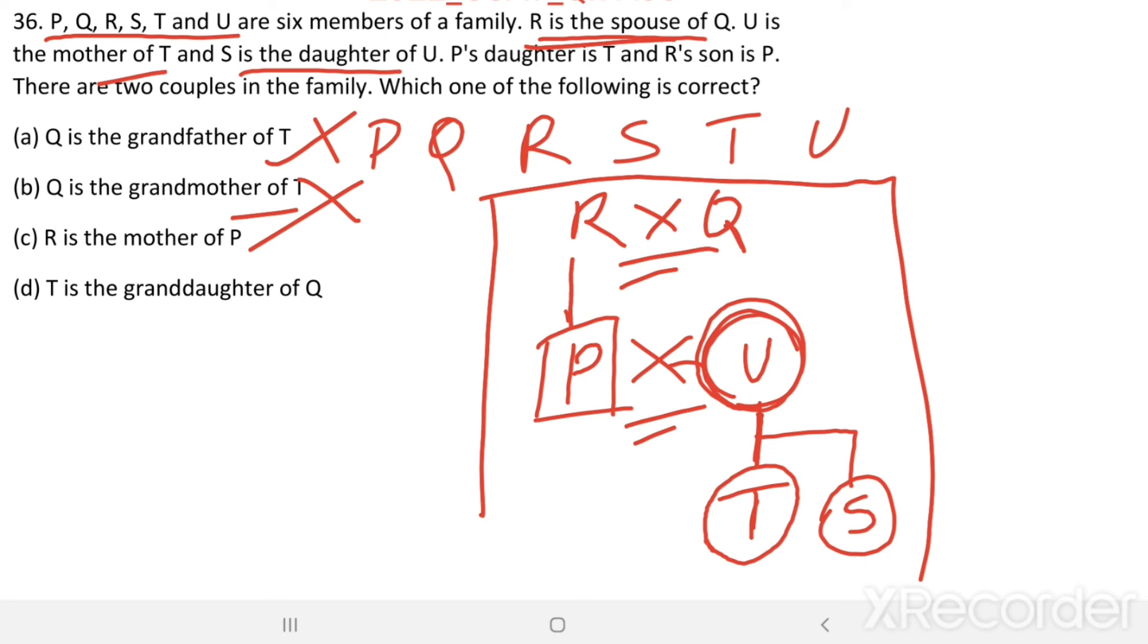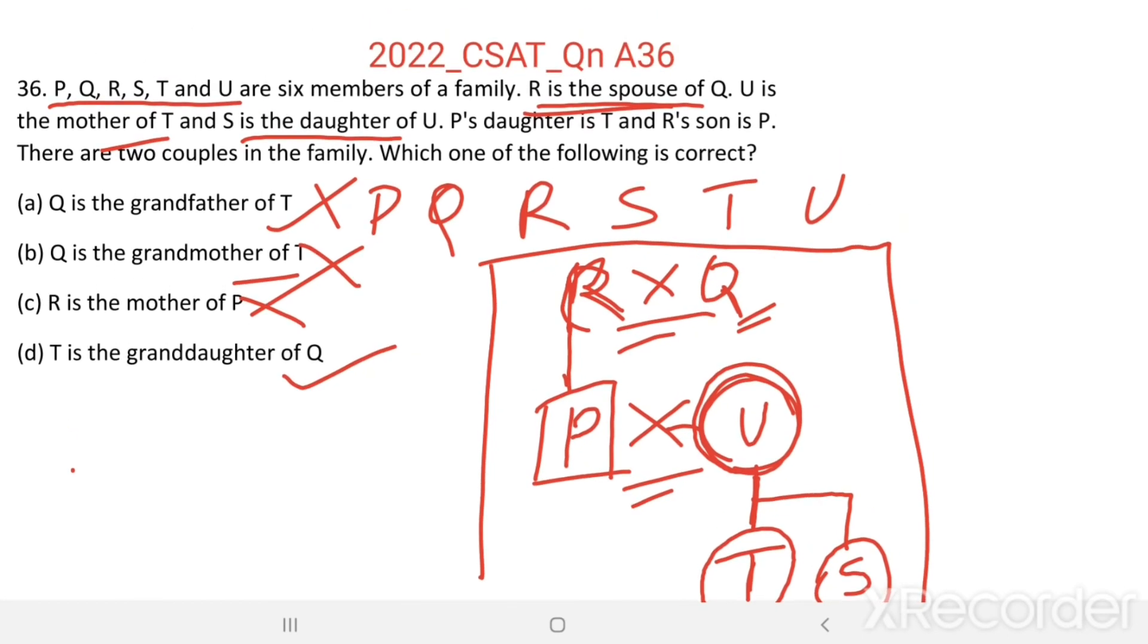R is the mother of P. We don't know. R is mother or father. R is parent of P. So, this is also false. T is the granddaughter of Q. T is the granddaughter of Q. That is true. Option D is the right answer.